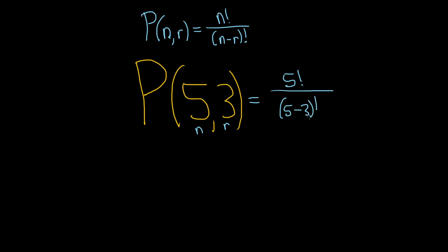I'm just plugging everything in to the formula very, very carefully. So now we can clean it up. 5 factorial is just 5 factorial, and here we just get 2 factorial.